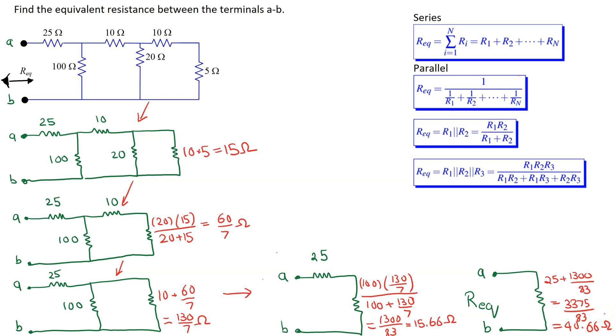Thus, this ladder circuit of resistors, from the point of view of terminals A and B, is equivalent to a single 40.66 ohm resistance. So this example shows how resistors in series and parallel can be combined to obtain the desired equivalent resistance between the terminals of interest.